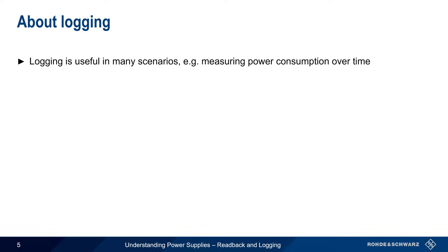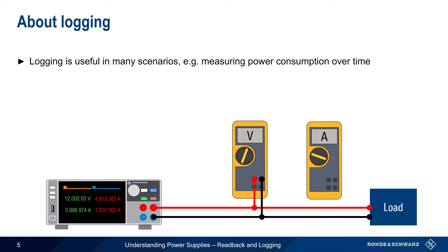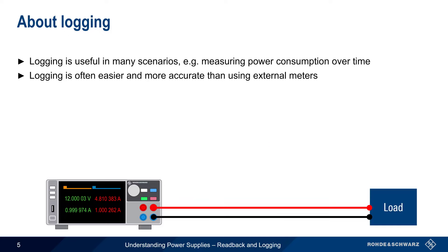There are many applications for logging, one very common example being measuring the amount of power consumed by a load over time. This requires simultaneous measurements of voltage and current, so one possible approach is using two meters — one for voltage and one for current. Note that in order to make a current measurement, we have to break the connection to the load so the meter can be placed in line. Using the logging function of a power supply is often easier and more accurate than using external meters. Logged values of voltage and current are time-synchronized, which is especially important for accurate power measurements, and logging is non-invasive in that it doesn't require the circuit to be broken.